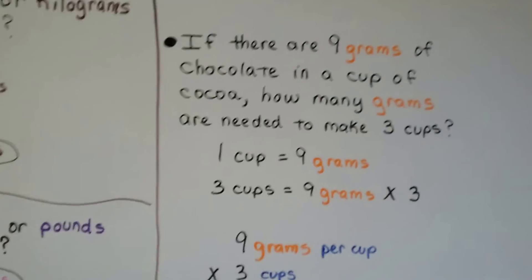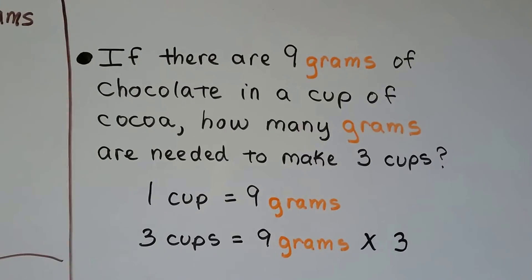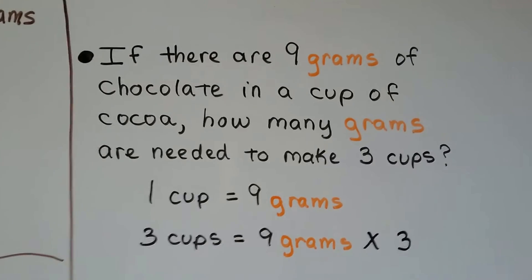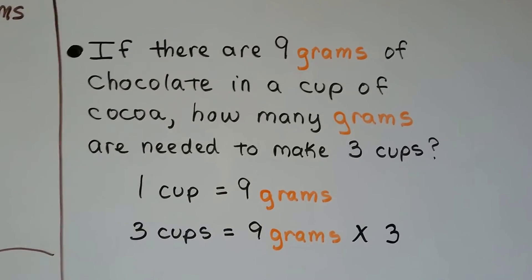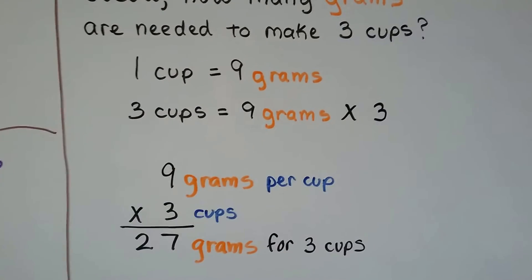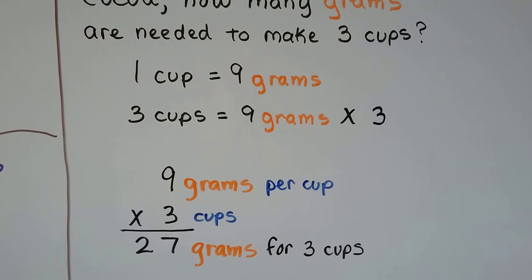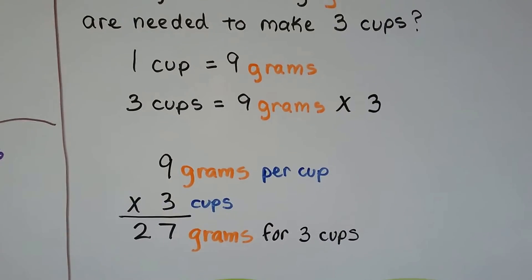If there's 9 grams of chocolate in a cup of cocoa, how many grams are needed to make 3 cups? Well, it says 1 cup is 9 grams. So 3 cups would be the 9 grams times 3. We would do 9 times 3. That would be 27 grams for 3 cups of cocoa. 27 grams of chocolate for 3 cups of cocoa.